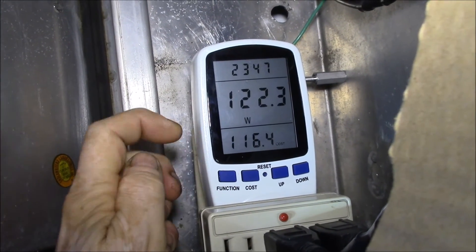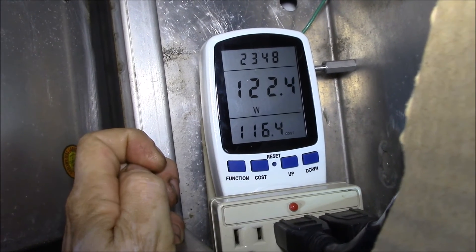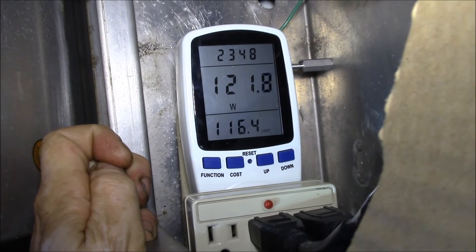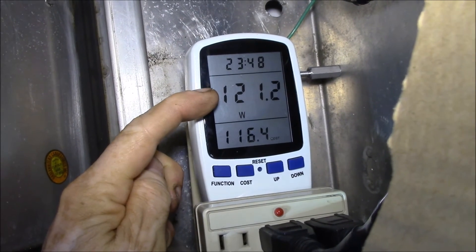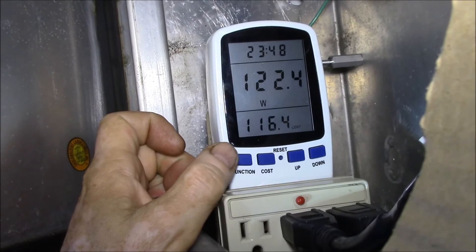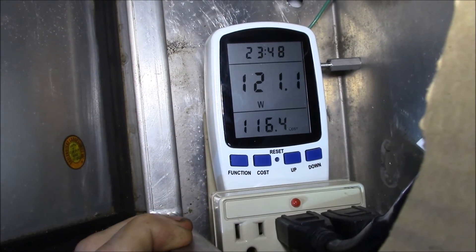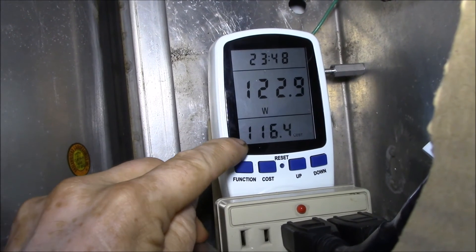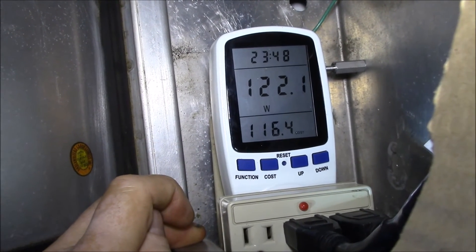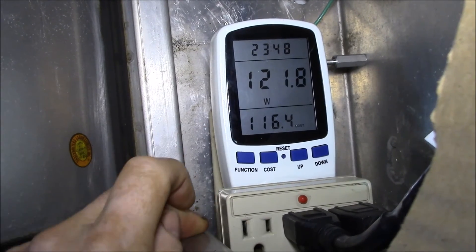You get that dual reading of kilowatt hours plus watts all on the same screen. I'm getting ready to reset this using the reset button for the month of August, but when I do that, it's going to reset my cost to zero. Okay, you can see I've reset the kilowatt hours—that's now zero.